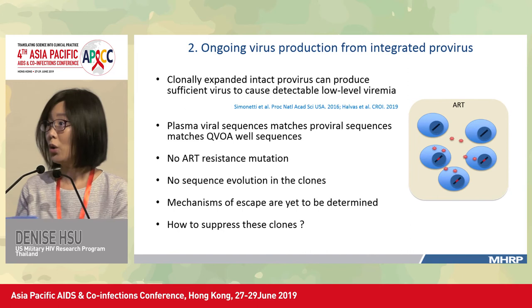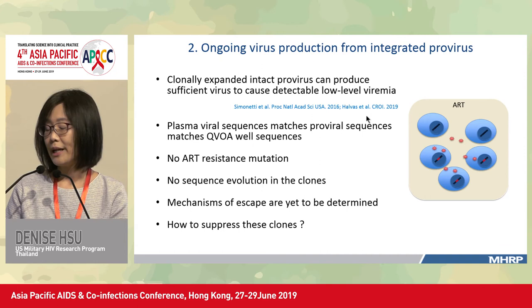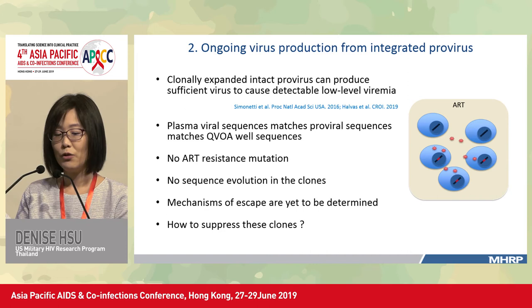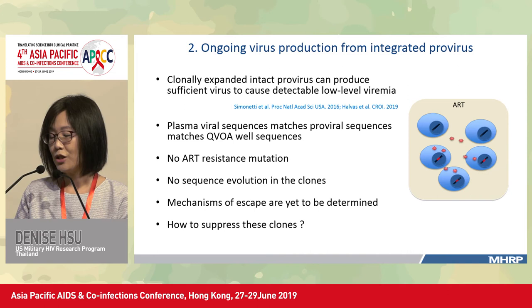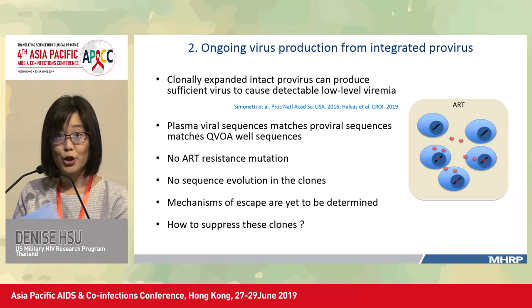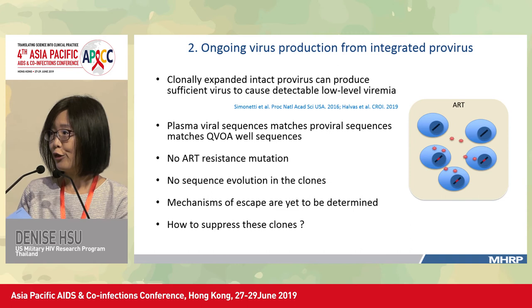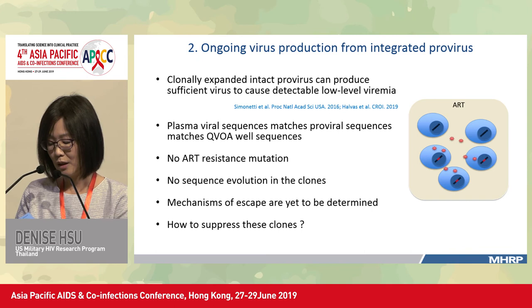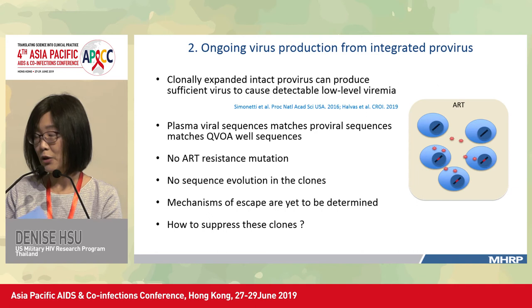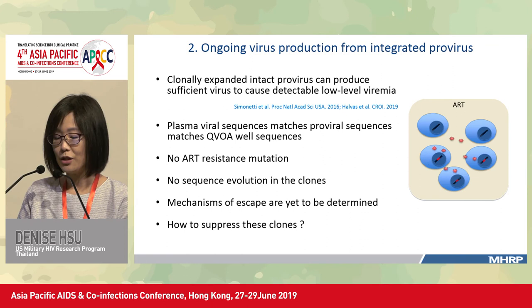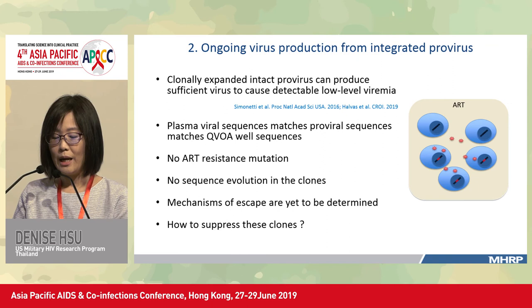The second option is ongoing virus production from clones of integrated proviruses. Clonally expanded intact proviruses can produce sufficient virus to cause detectable low-level viremia. In these patients, plasma viral sequences match the proviral DNA sequences as well as the Q4 sequences, meaning that clonal proviruses are replication-competent — they can be induced in the Q4 to produce virus reflected in matching mRNA sequences in the blood. Importantly, these studies also suggest that new rounds of infection are not established on ART, as there is no evidence of ART-resistance mutations or sequence evolution in the clones.